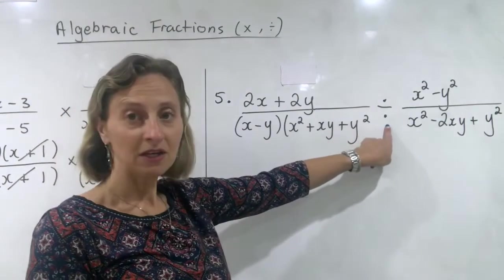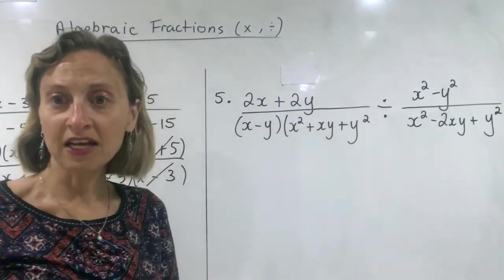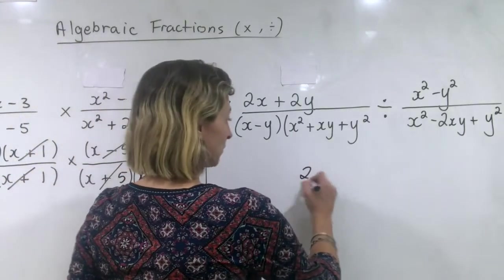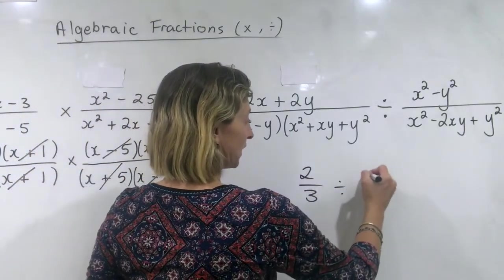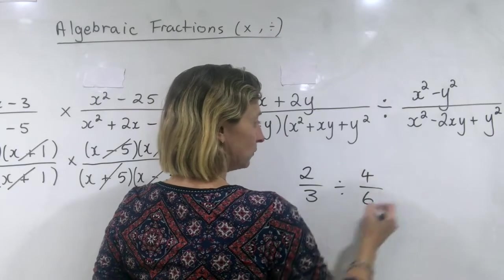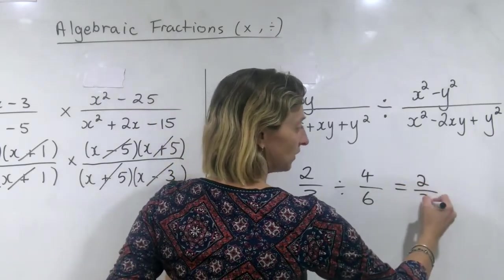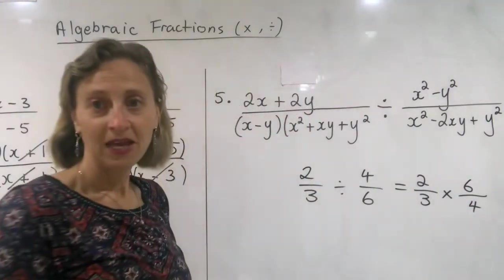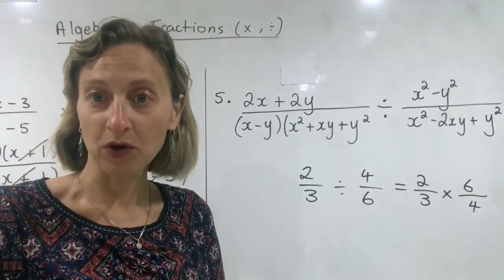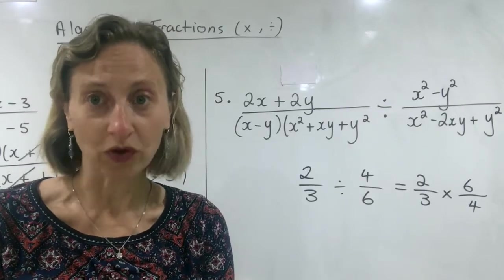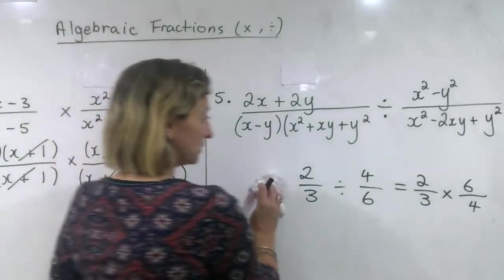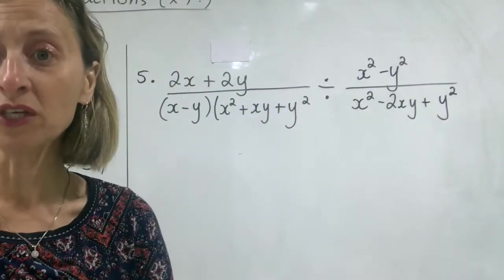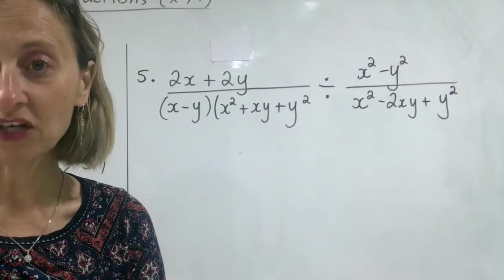This one is a division. Remember that when you're dividing fractions — it doesn't matter if they're normal fractions like we did in primary, two over three divided by four over six — you would change the divide to a times and flip the fraction upside down, then times the top and times the bottom. So we're going to stick with that; we're not going to do anything different.